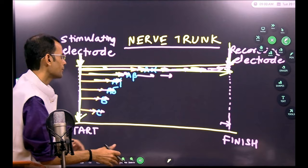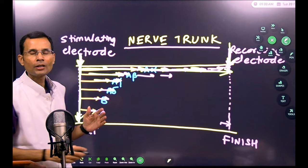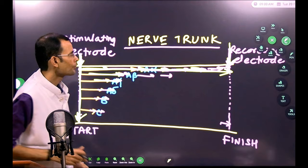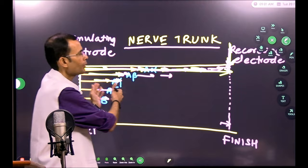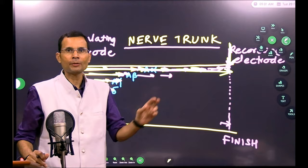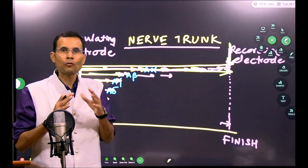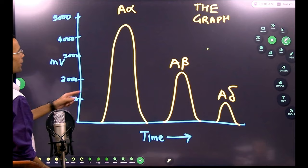All these nerve fibers conduct the impulse according to their velocities. The fastest, A-alpha, will carry the impulse with the greatest velocity and will reach the recording electrode first. If there were 50 A-alpha fibers in the nerve trunk, all of them carry the impulse fastest and that signal is picked up by the recording electrode. The aggregate of all those 50 A-alpha fibers' action potentials gets recorded together as one peak.